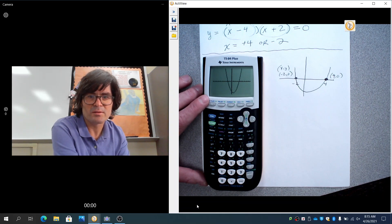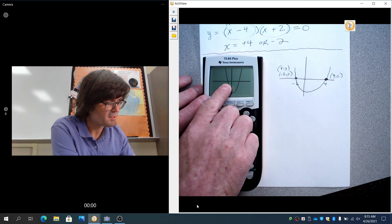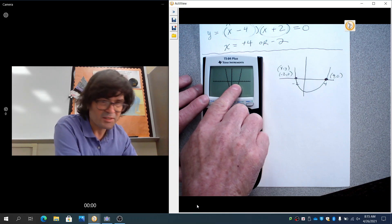And there's your solution. There's your graph. You can kind of see that it does cross at negative 2 and then it does cross at 4.